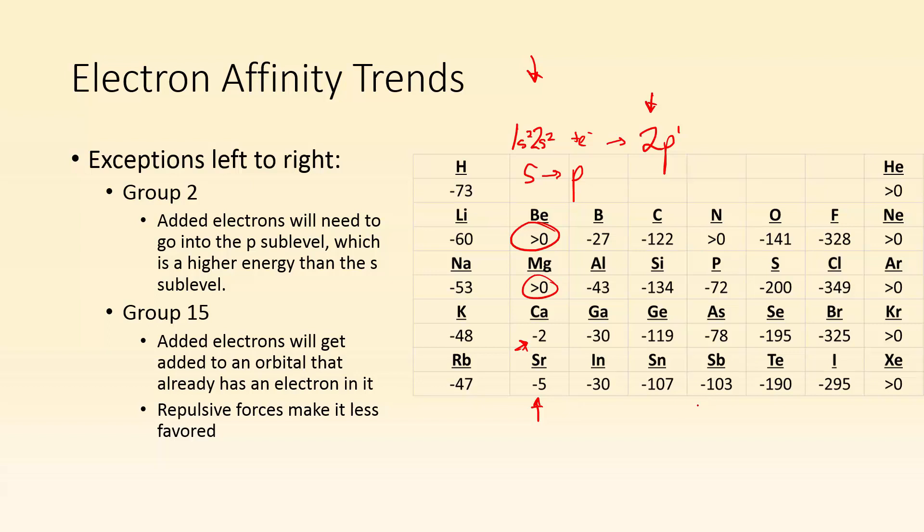If we take a look at group 15, nitrogen, phosphorus, this group right here, what's happening is the P sublevel has each orbital with an electron in it. So when we have to add one more electron to it, they're going to have to pair up. They're negatively charged, so when you add one more electron, you've got to put it in the same orbital as another electron, and you're going to get repulsion going on there because they have the same charge. You can see there's a dip in the electron affinities at group 15 for that reason.